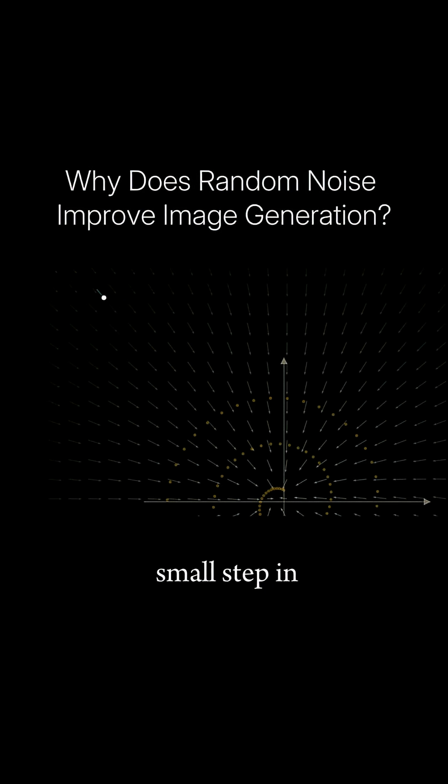We take a small step in the direction returned by our model and add scaled random noise, which effectively moves our point in a random direction.